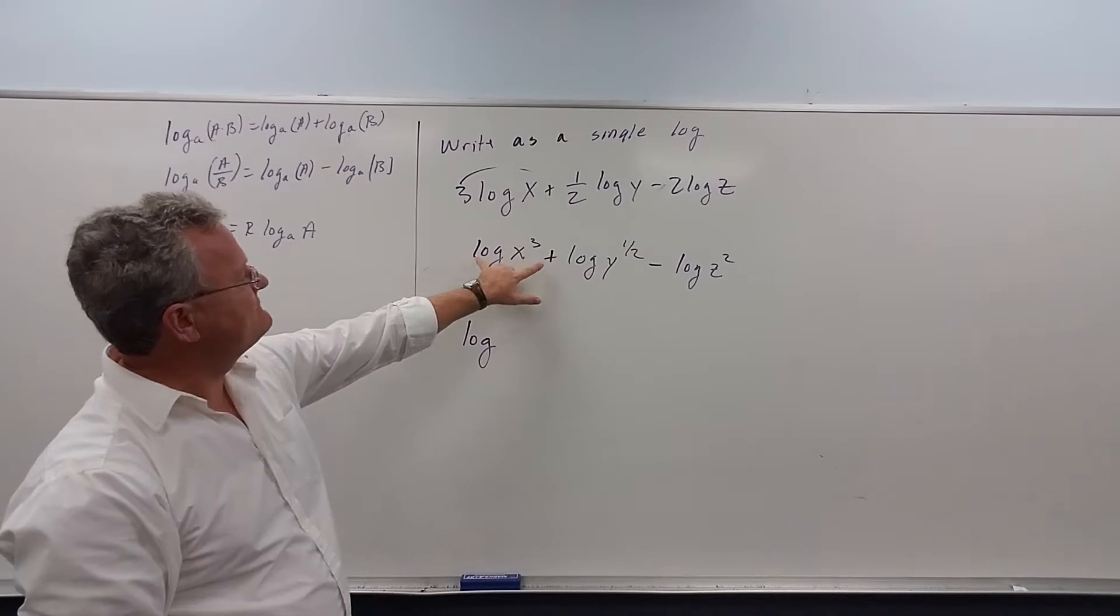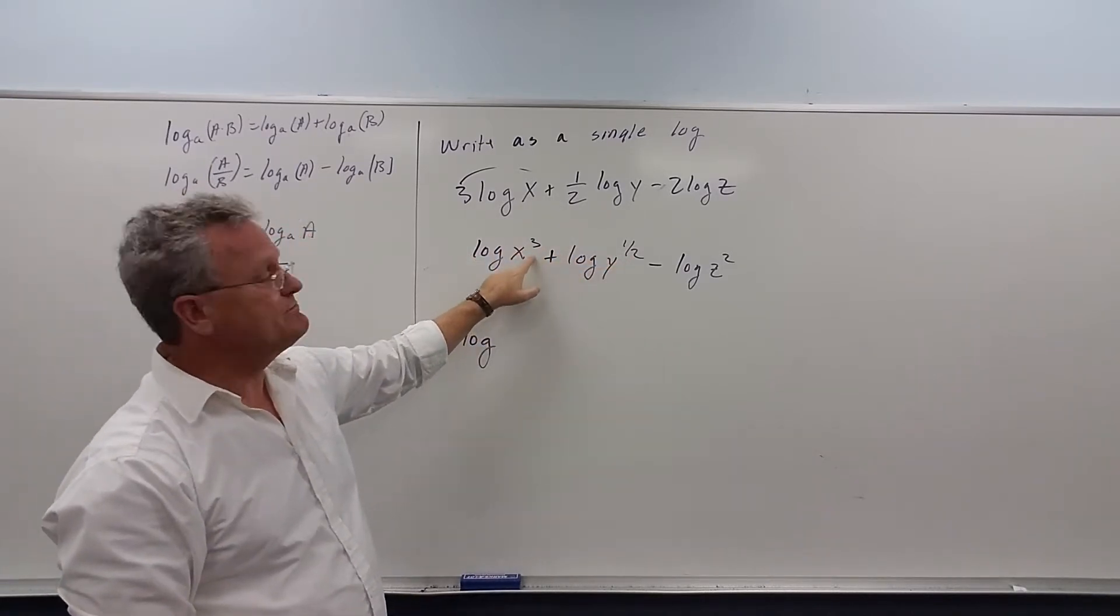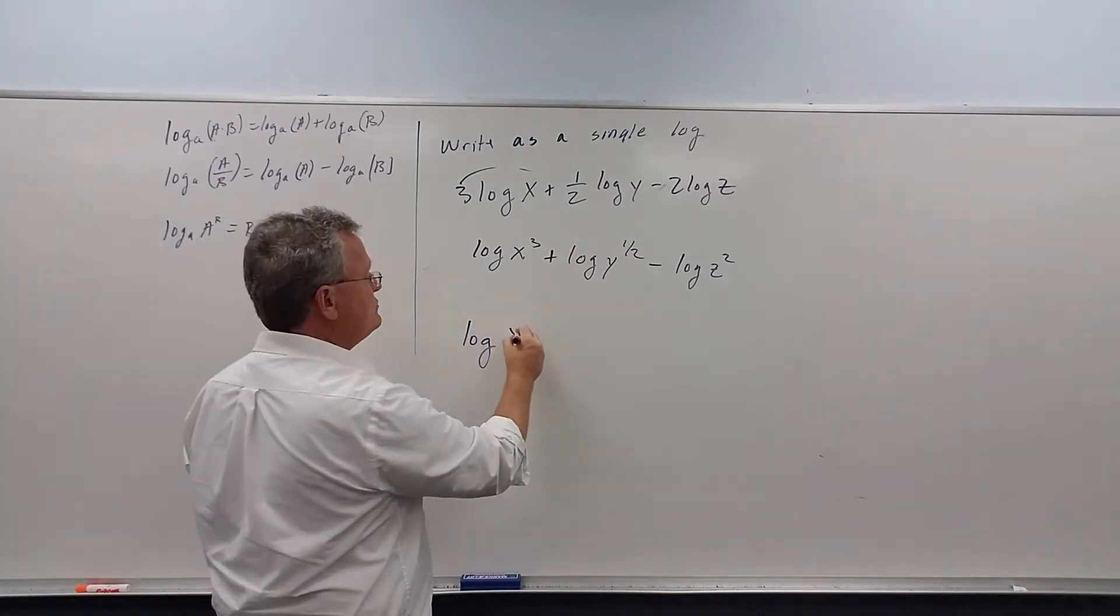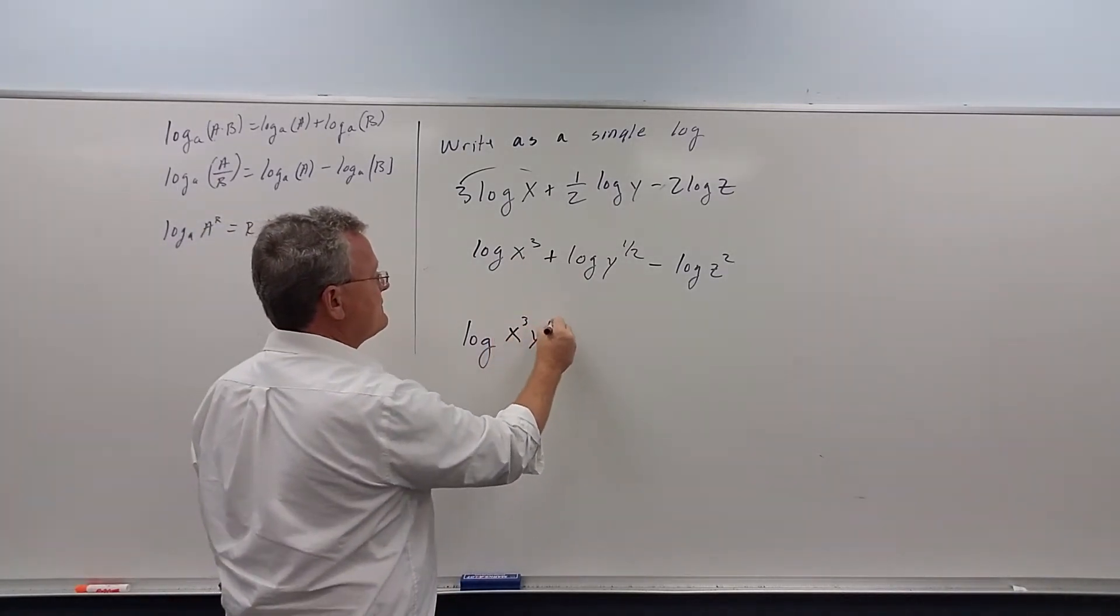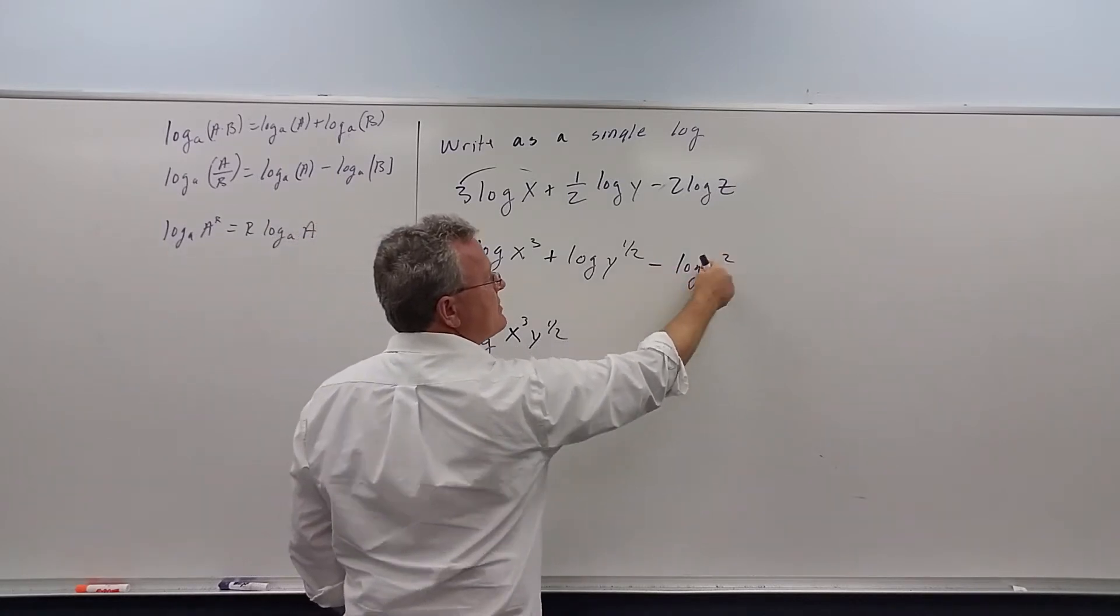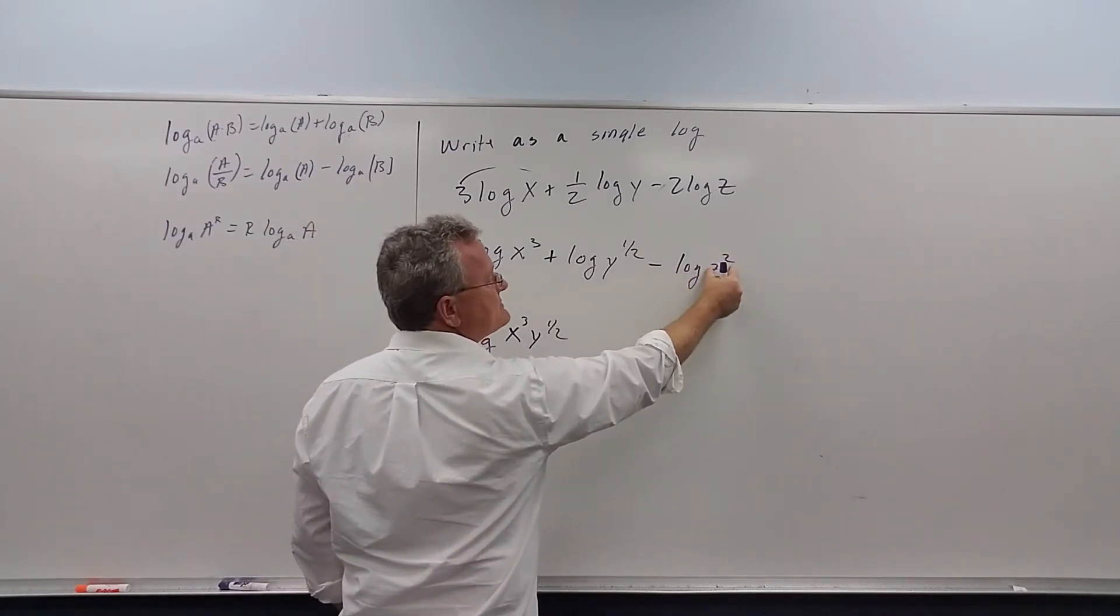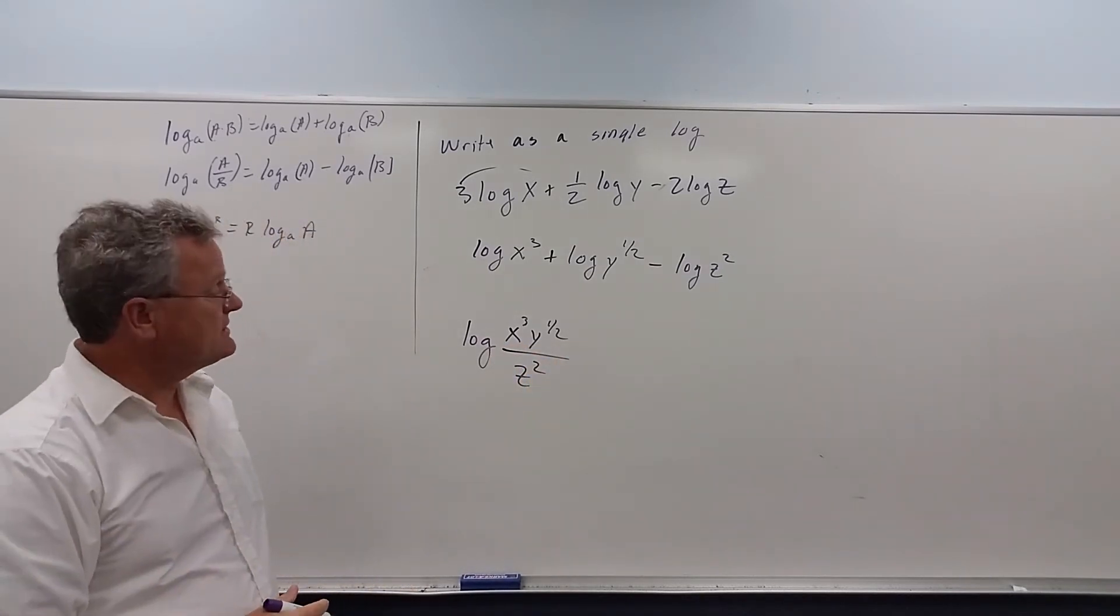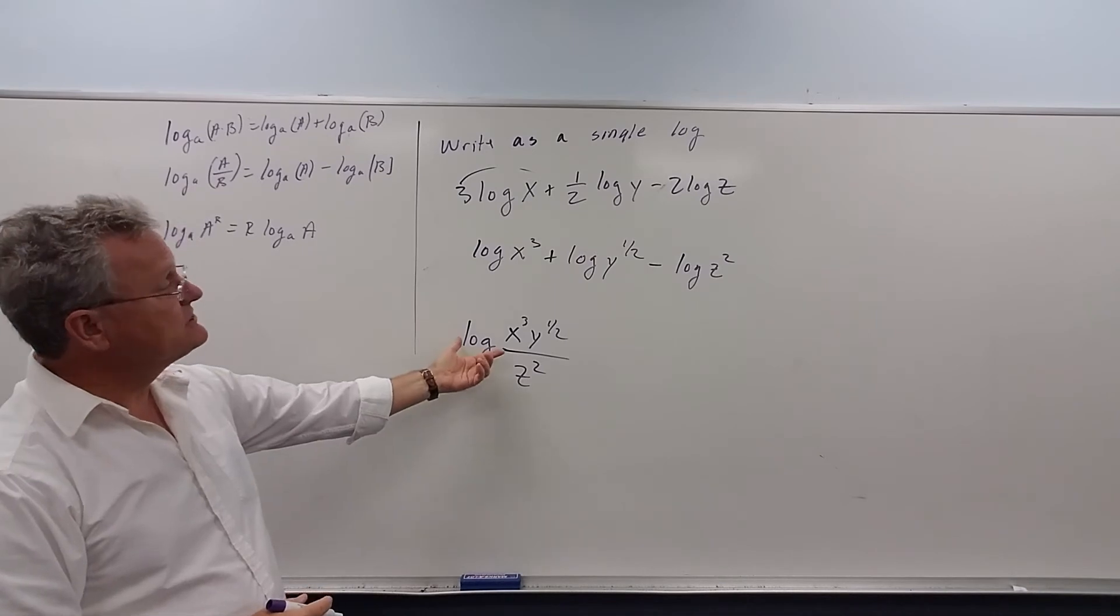The positive logs, they go in the top. So x to the 3 and y to the half goes in the numerator. The logs that are subtracted, this is called the argument. But this goes in the denominator, and that's it, that's your answer. So we now have a single log.